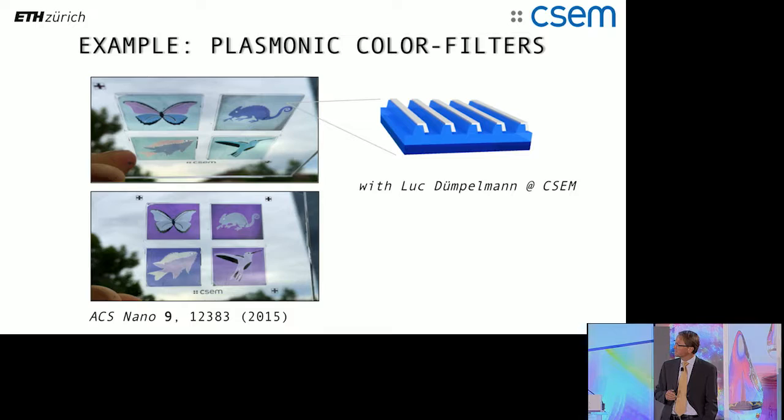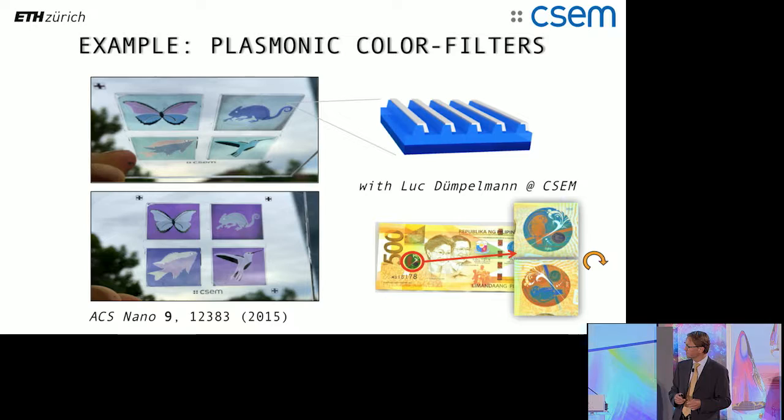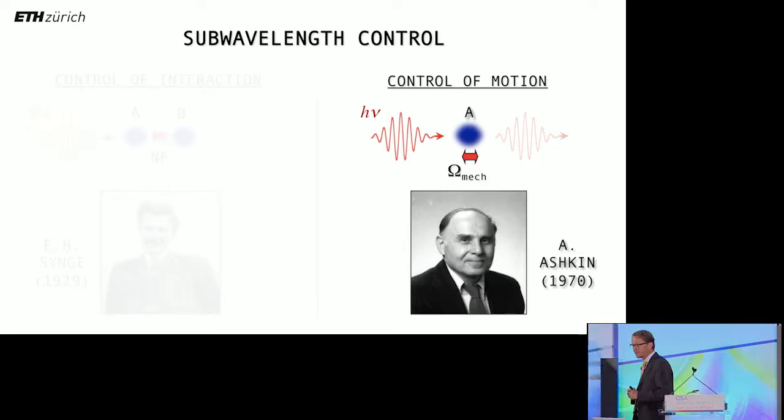Here, we make use of arrays of antennas, shown on the upper right. And these arrays of antennas, they interact with the incoming light and generate color effects. I spare you the details, but here you see an example. This is work done at CSCS in Switzerland. And depending on from what angle you look at it, you basically see different colors. And this is being exploited for security applications, such as for banknotes.